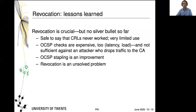Let's summarize the lessons learned. Revocation is crucial, but we do not have a silver bullet. CRLs never really worked and always had very limited use, but they are useful to understand the basic principle. OCSP checks are expensive — there's latency, load, and bandwidth — and they are not sufficient against an attacker who drops traffic to the CA. OCSP stapling would be nice if it were deployed in sufficient numbers. For the general web, revocation is an unsolved problem. For a subset of important sites, most browsers can offer a solution.